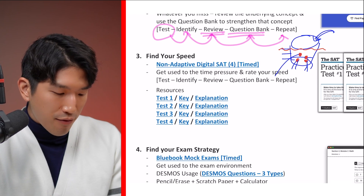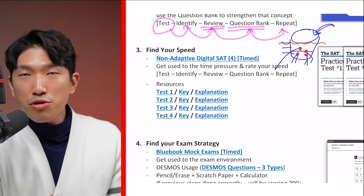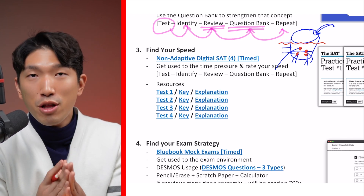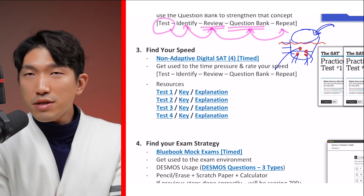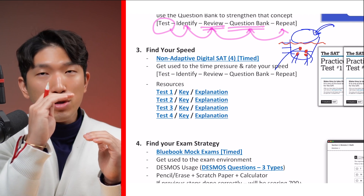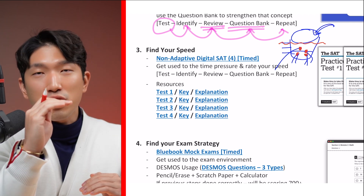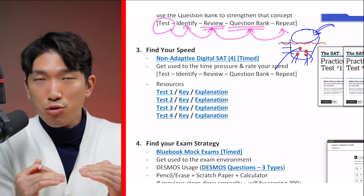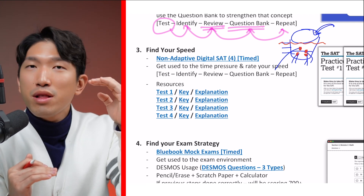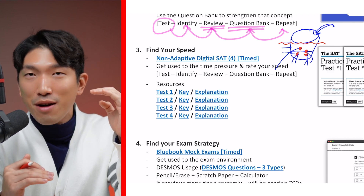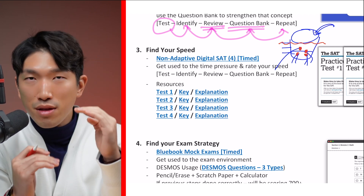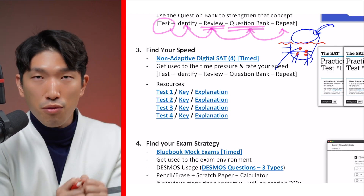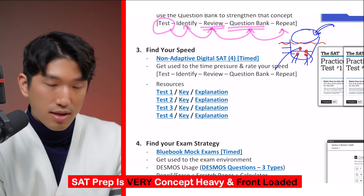Steps one and two are all about plugging the holes in your bucket. Once your bucket is in good shape, it's time to move on to the next step: finding your speed. If you've done steps one and two correctly, you'll be able to solve most SAT questions correctly. But there is a time limit, and you have to solve them not only correctly but quickly. There's a dilemma here: if you raise your speed, your accuracy goes down and you make more mistakes. If you slow down to increase accuracy, you end up only completing about 50% of the questions before time runs out. That's what I mean by finding your speed — and you really can't do this if you haven't done the past two steps correctly.